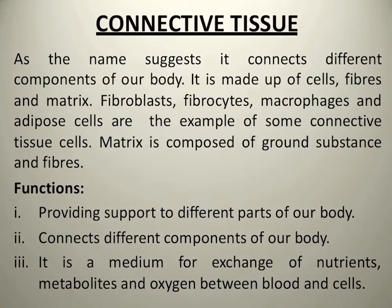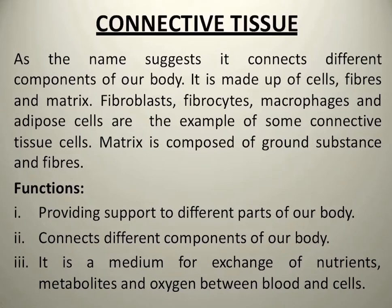In our connective tissue, fibrocytes or fibroblasts are needed to support our body and connect different components. For example, blood — blood is circulated in the whole body, which means it connects the whole body. It is a medium for exchange of nutrients, metabolites, and oxygen between blood and cells. Hemoglobin provides oxygen. Blood is also a component that helps exchange nutrients, so it is a type of connective tissue.